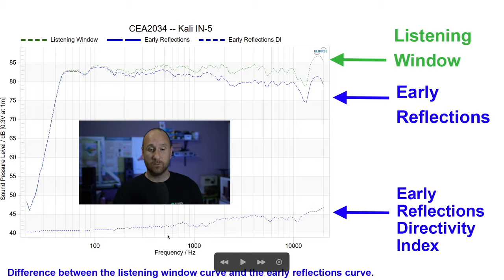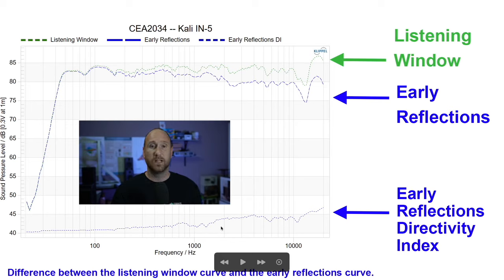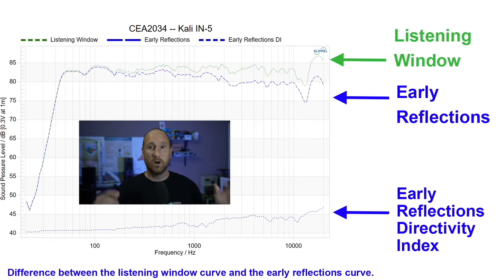The same thing goes for the early reflections directivity index — if it were flat through here it would be an omnidirectional speaker, not beaming at any point, playing 20 Hz to 20 kHz wide open all around the speaker like a big sphere of sound. So you've got really two extremes: a very focused, highly beamed speaker, or an omnidirectional speaker. Anywhere in between is really up to you as to what you like, and it's also based on what your room is like.